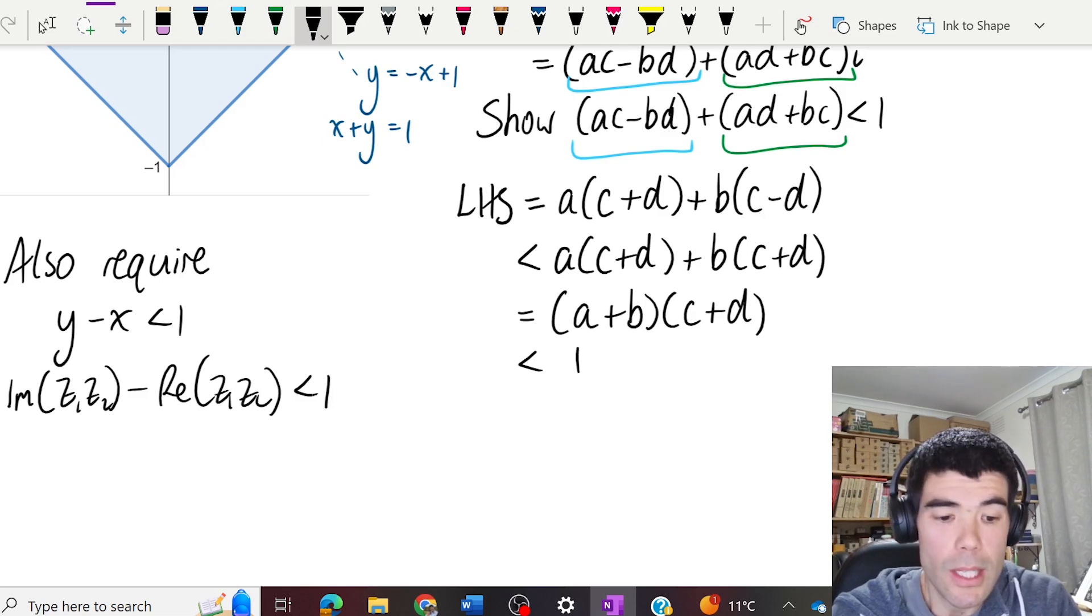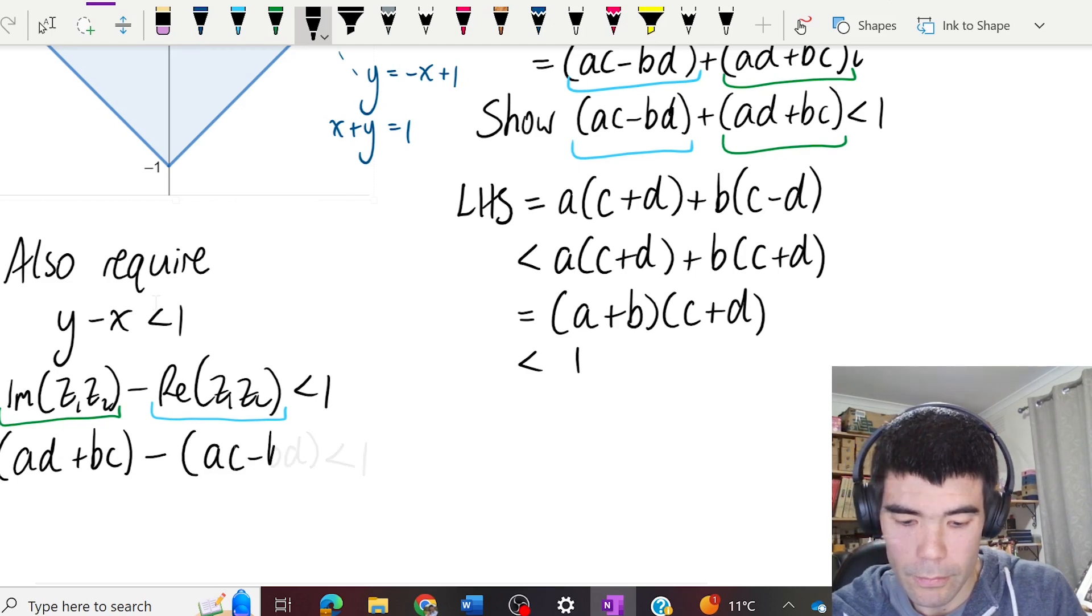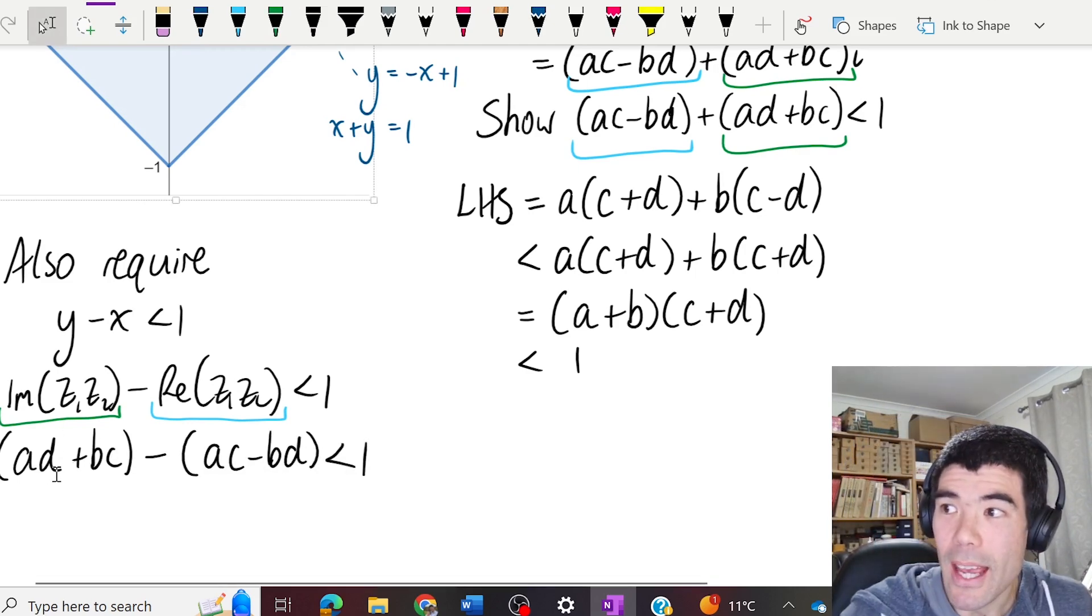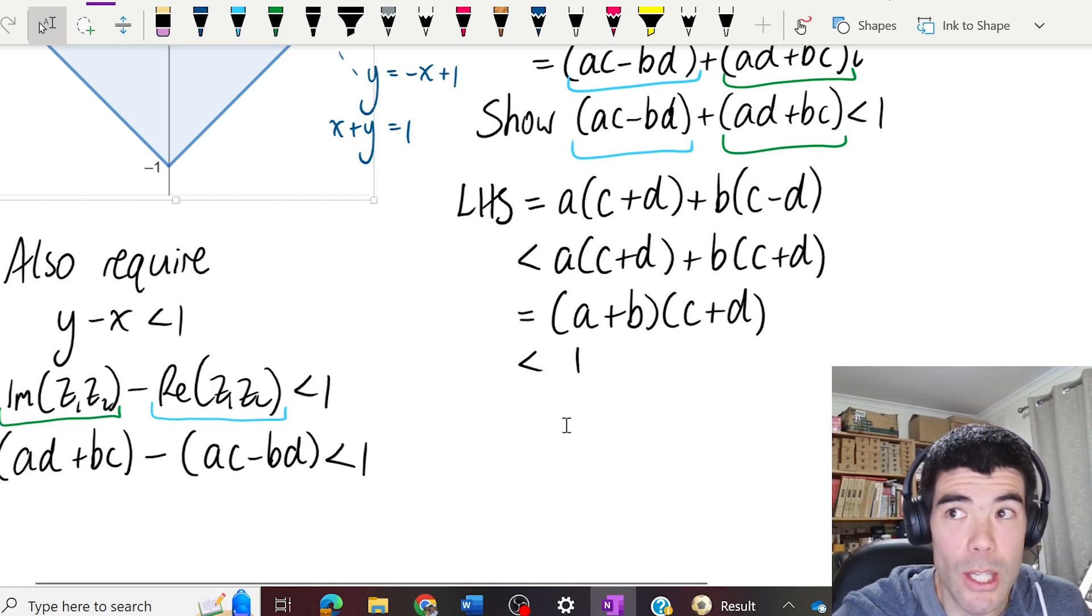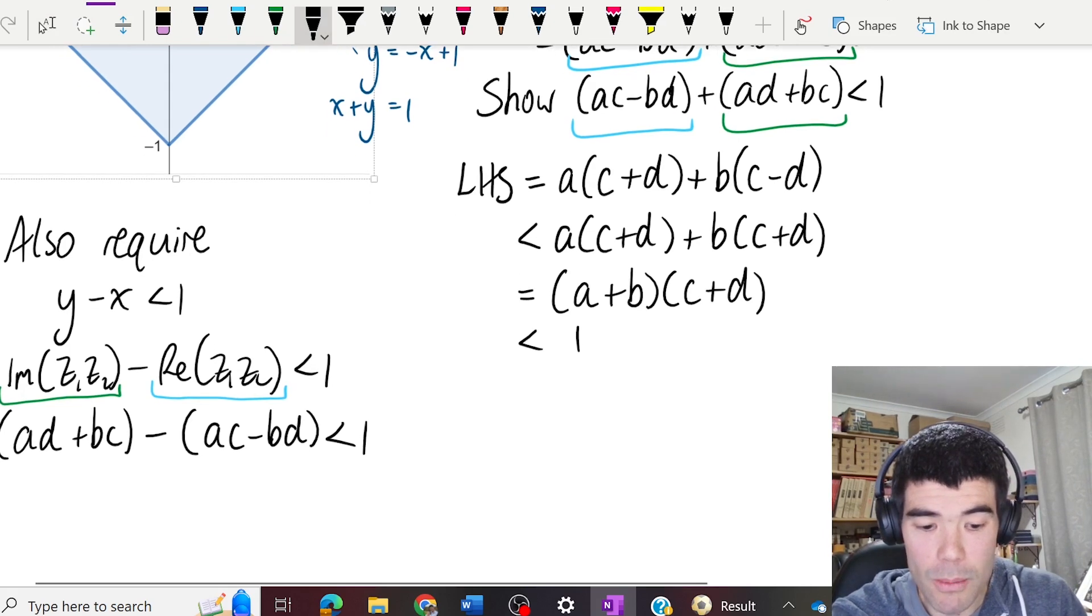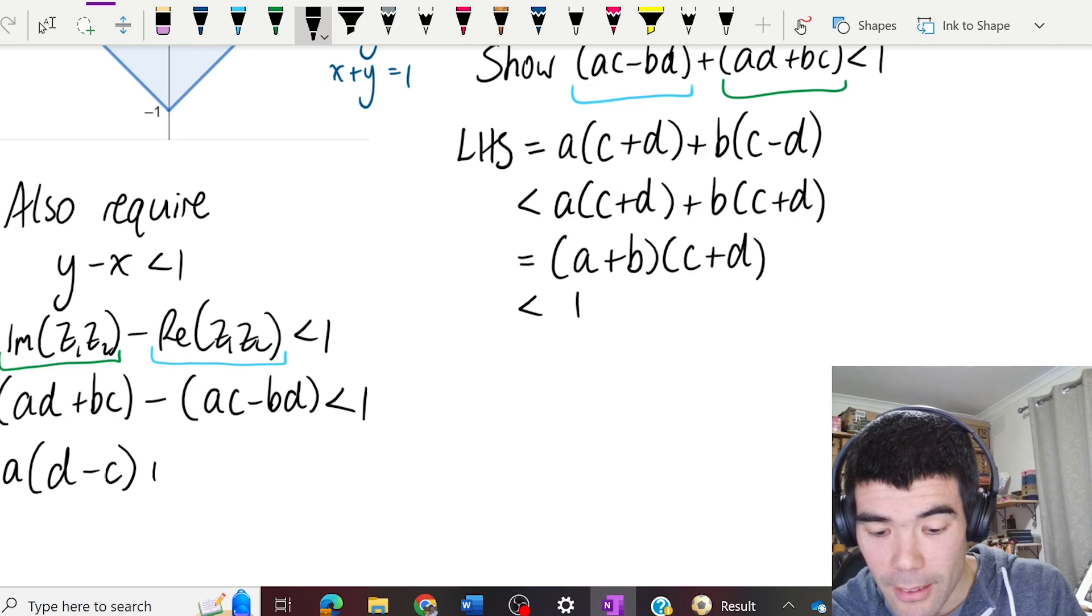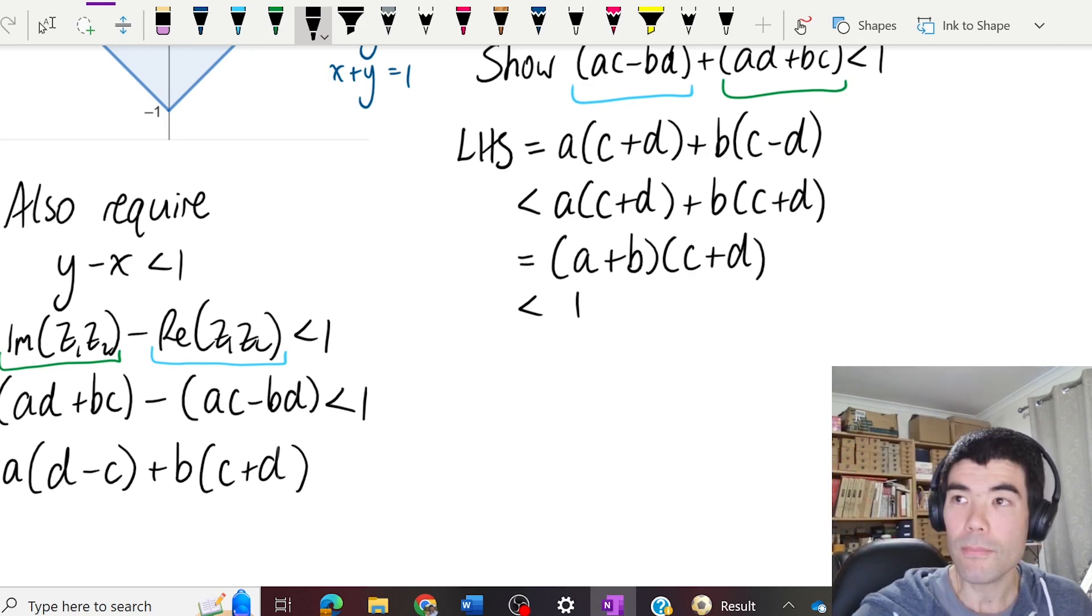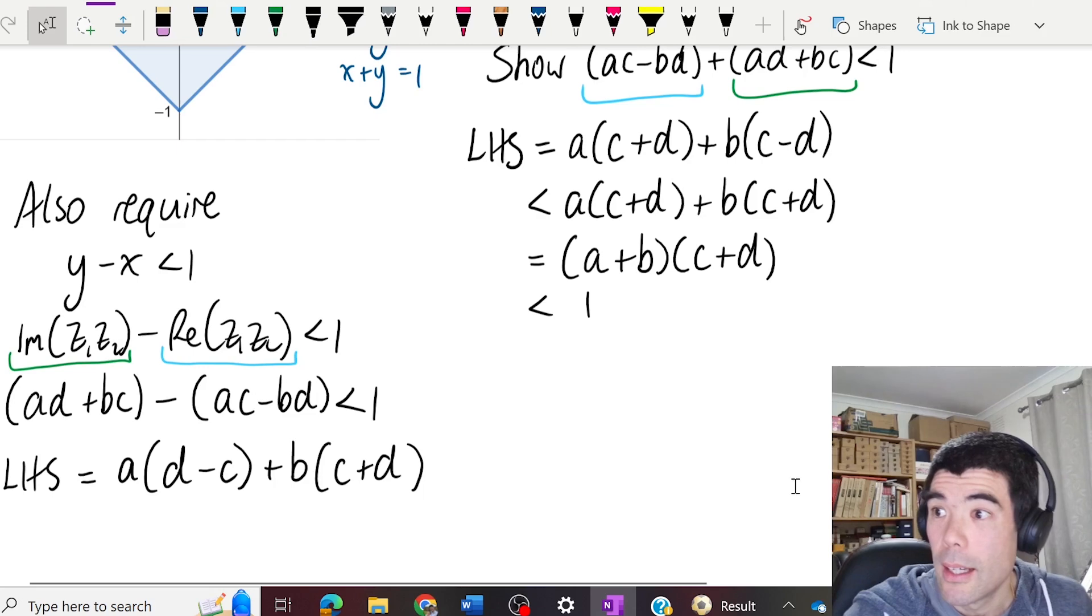So again, we can take our expressions from over here. And then I have to show that ad plus bc minus ac minus bd is less than one. Hopefully a similar trick is what we've used over here would also work. Let's see if we group our a terms again. So our left hand side, we can group our a terms and our b terms like this.